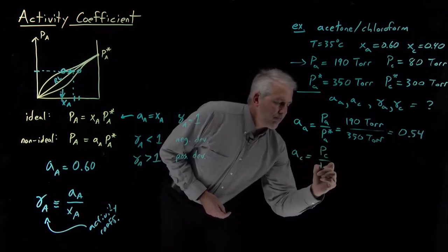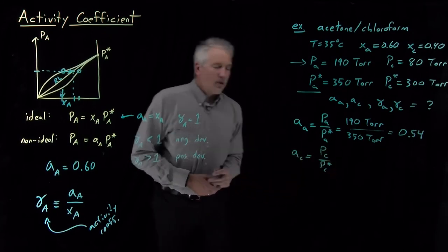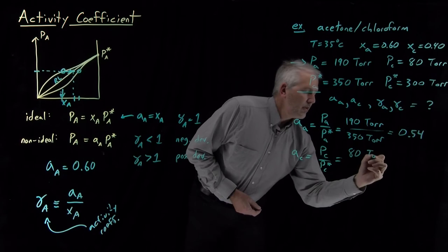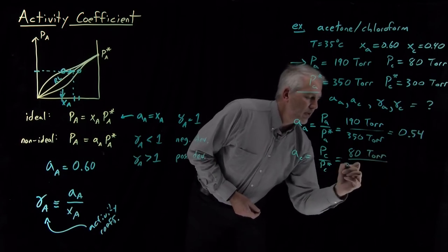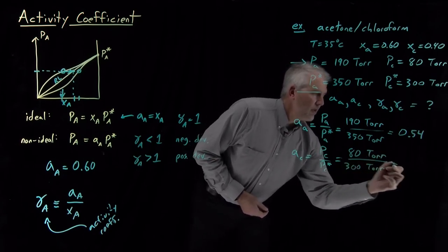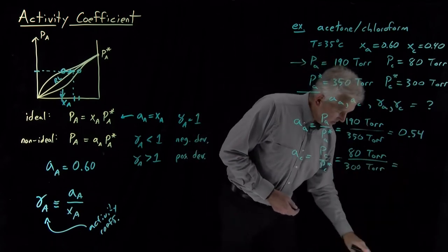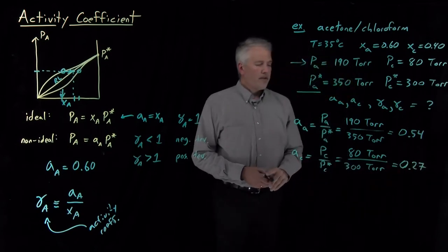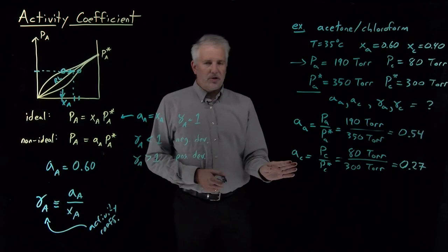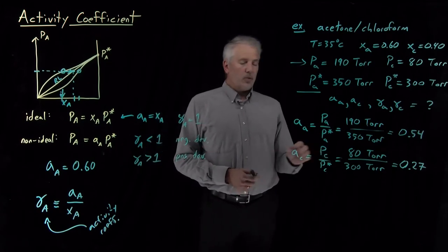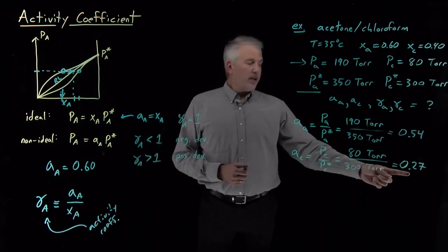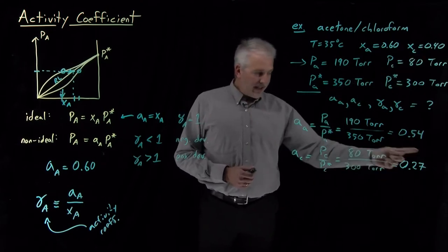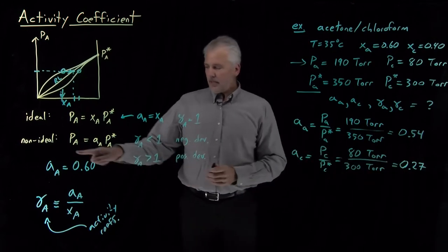Likewise, for chloroform, we take the ratio of partial pressure to vapor pressure: 80 divided by 300, which gives us 0.27. So the chloroform in solution behaves as if it were in an ideal solution with mole fraction 0.27. It actually has mole fraction 0.4, but if we want to continue using Raoult's Law, we have to pretend that it has a mole fraction of 0.27.